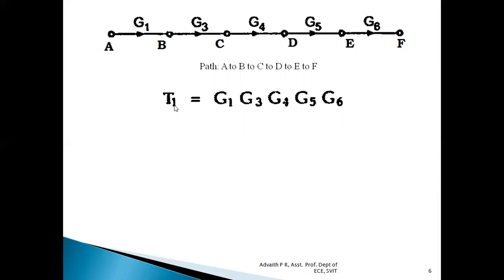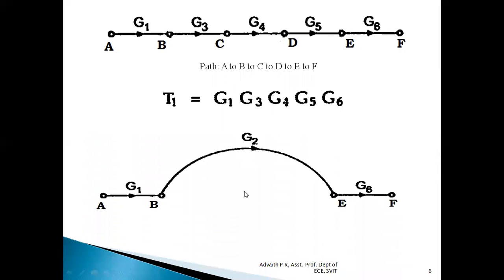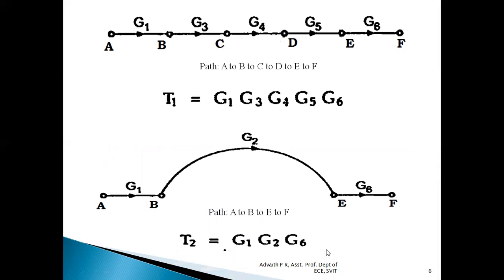So T1, the gain of the first forward path, is G1·G3·G4·G5·G6. Similarly, we have the second forward path A→B→E→F, and the gain with respect to this second forward path is G1·G2·G6. So we have two forward paths, meaning K equals two.